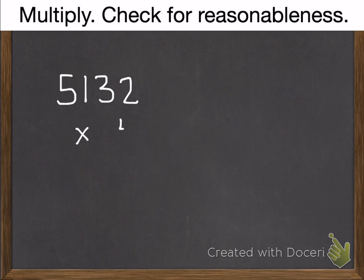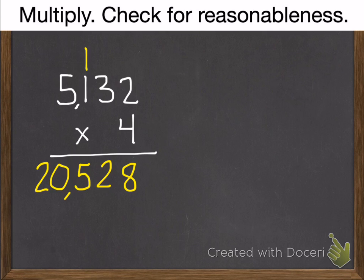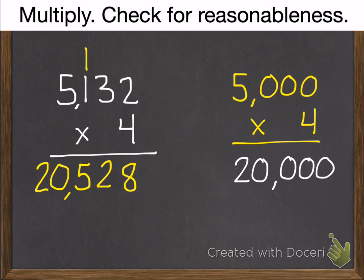Practice problem two. Now we're in the thousands. Five thousand one hundred thirty-two times four. Go ahead and pause. Two times four is eight. Four times three is twelve. Four times one is four, plus one is five. And four times five is twenty. So twenty thousand five hundred twenty-eight. Five thousand one hundred thirty-two rounds to five thousand. Four times five is twenty, plus three zeros, gives you twenty thousand. And that is reasonable.